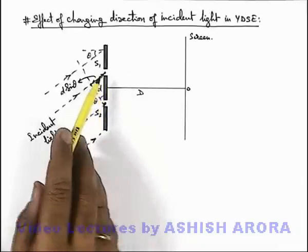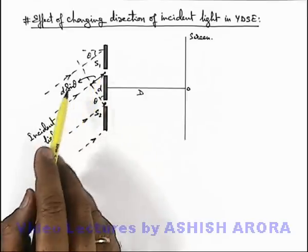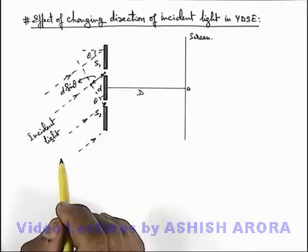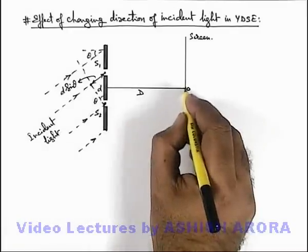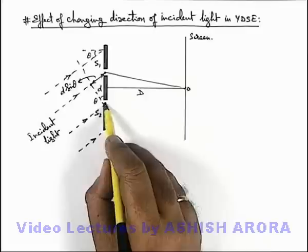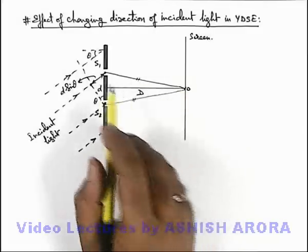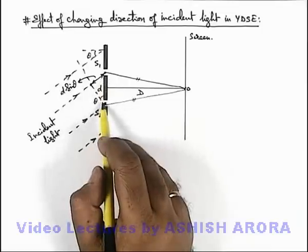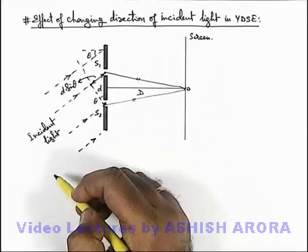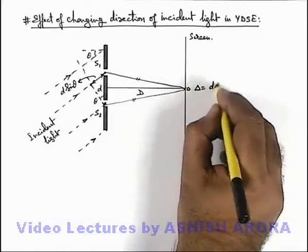So here we can see that the waves emitted from slit S1 are lagging in path by a distance d·sinθ as compared to source S2. If we talk about the center of the screen, after the slit plane, when the light waves arrive at the center of screen, there will be no physical path difference as these paths are equal. But before illuminating the slit sources, there is a path difference introduced due to the change in direction of the incident beam. So at point O, the total path difference we can write as d·sinθ.